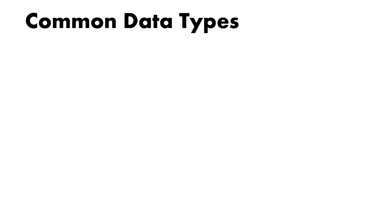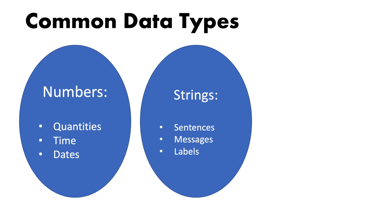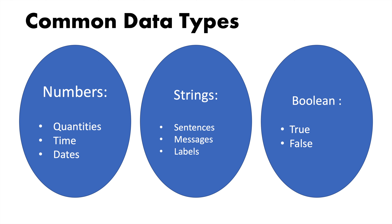When we begin we quickly run into various types of data. Common types of data include numbers, quantities, times and dates, strings of characters like sentences, messages or labels, and values like true or false which we call booleans, as data is all around us in the world.